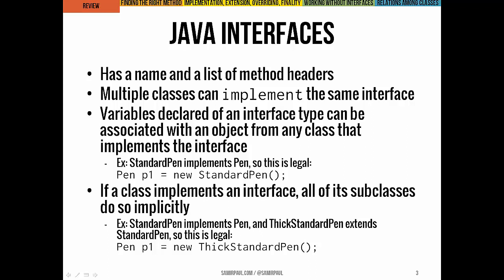If one class implements an interface, all of its subclasses also do as well — they inherit that contract, that relationship. As an example, if you made a new class called ThickStandardPen, it inherits everything from StandardPen. We can point a pen variable at a ThickStandardPen, because it inherits the implementation of the pen interface through its superclass StandardPen.